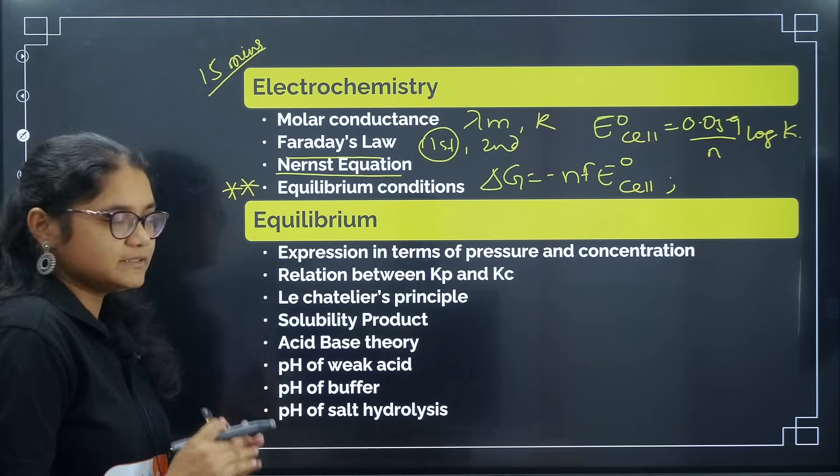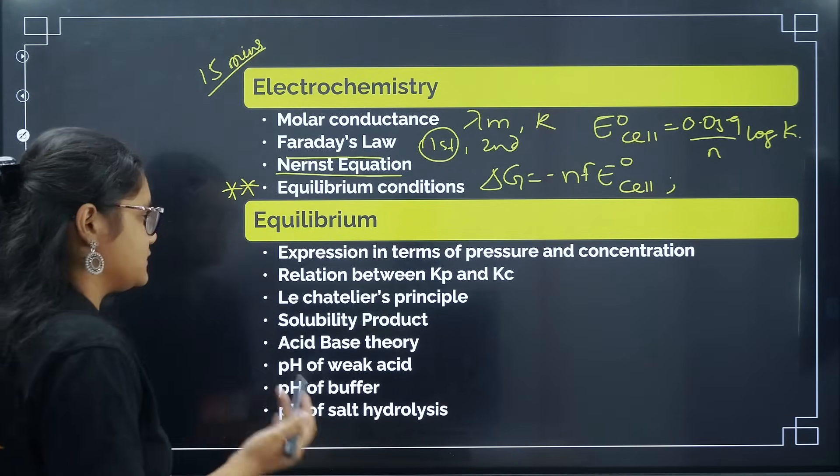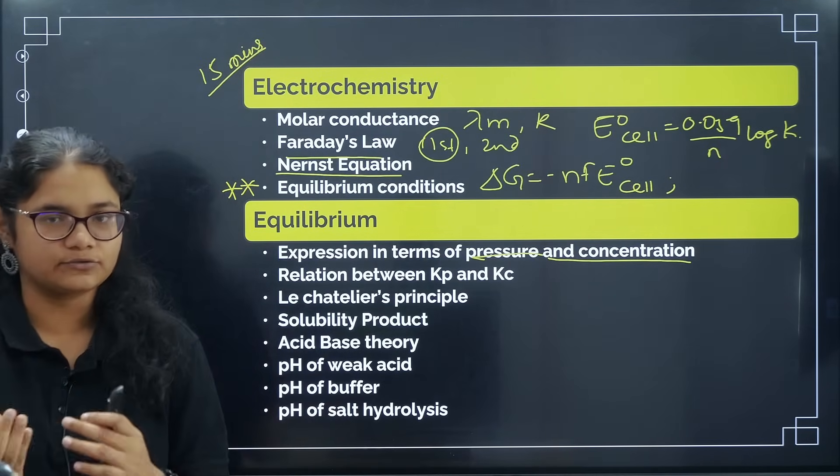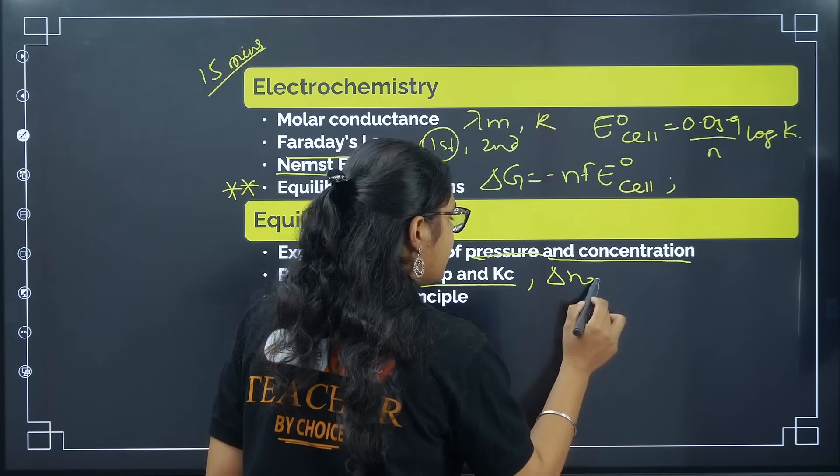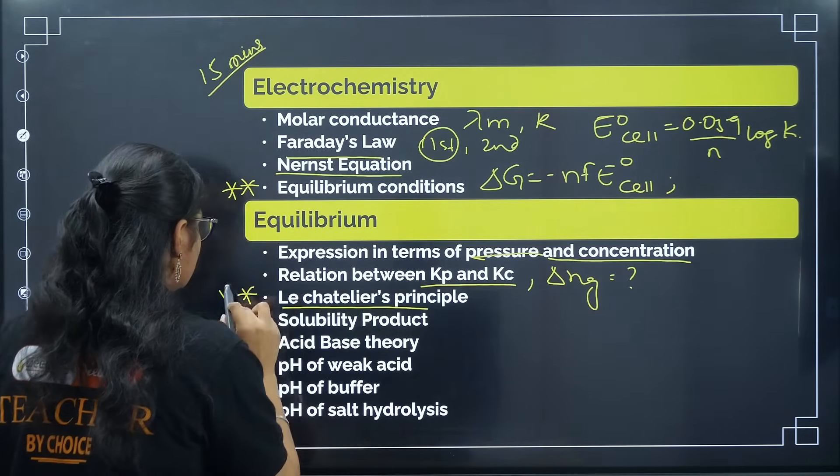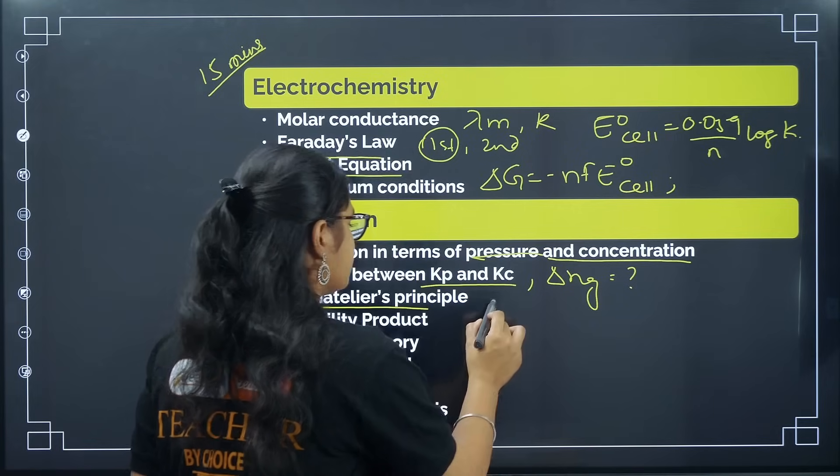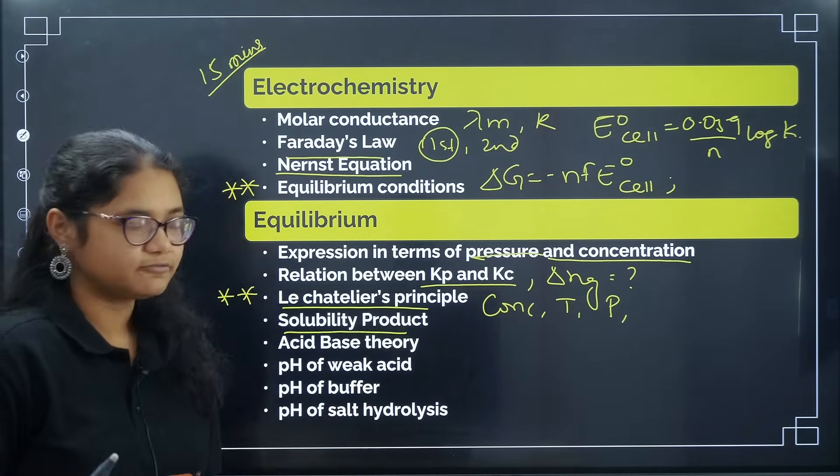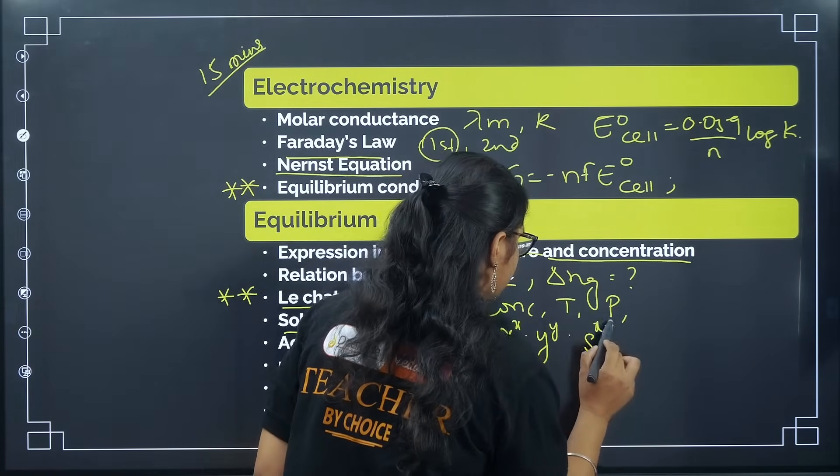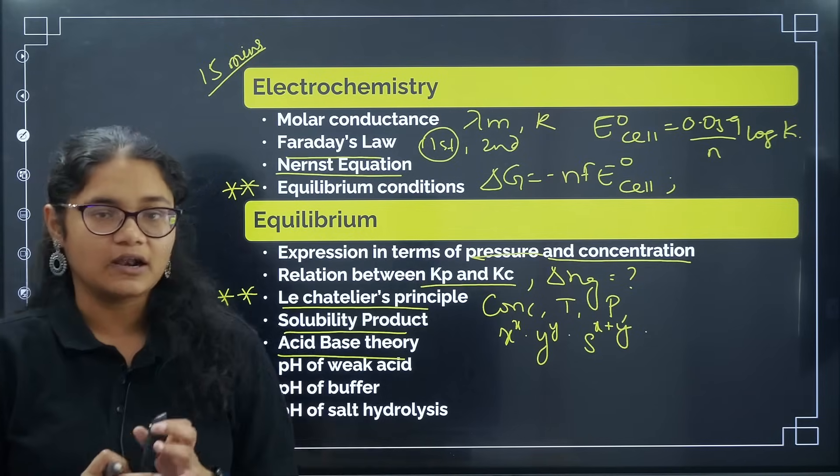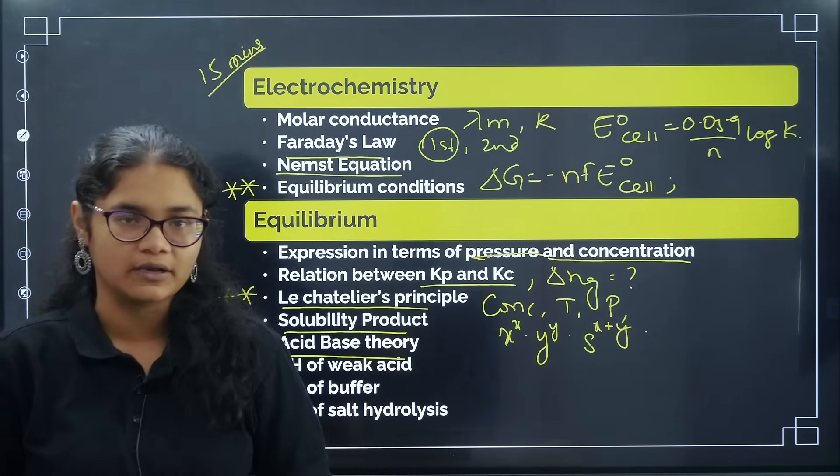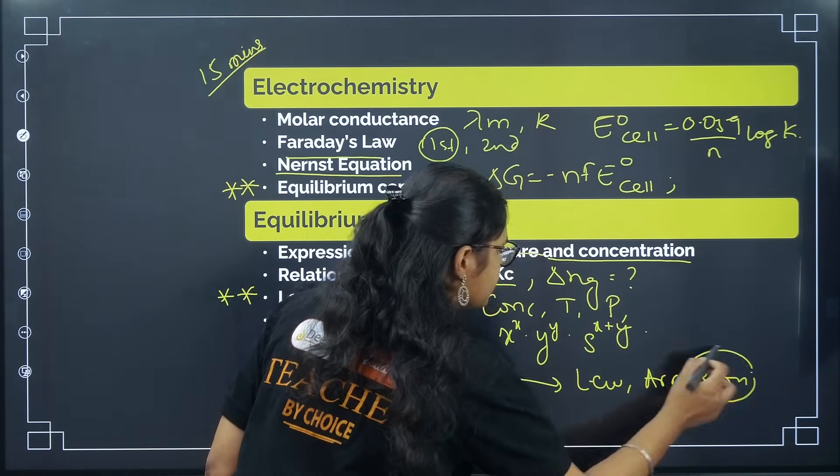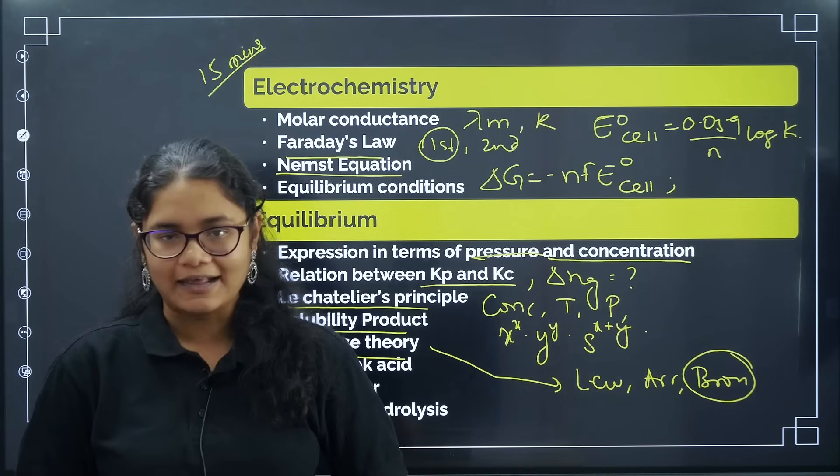You can take another 15 minutes for revising these electrochemistry concepts. Coming to equilibrium, you can expect one question from equilibrium chapter. First is expression in terms of pressure and concentration - product concentration by reactant concentration raised to the power of their stoichiometric coefficients. Then relation between Kp and Kc, how to find Ng. Le Chatelier principle is very important - just revise all the factors including concentration, temperature, pressure. Now solubility product - what is the general formula for solubility product: X to the power of X, Y to the power of Y, S to the power of X plus Y.